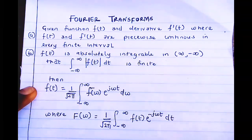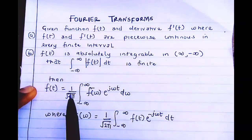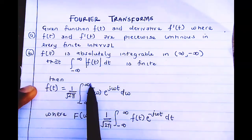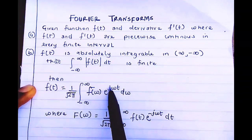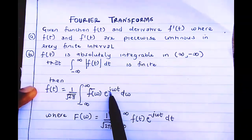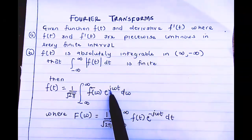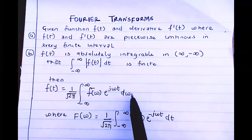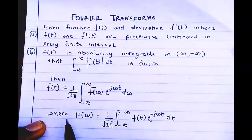Then f(t) is absolutely integrable from minus infinity to infinity. The function f(t) can then be written as one over the square root of two pi, times the integral from minus infinity to infinity of F(ω) times e to the power j·ω·t, with respect to t, where j is a complex number.